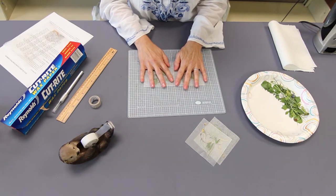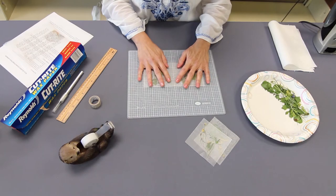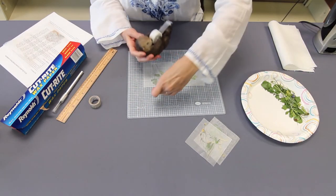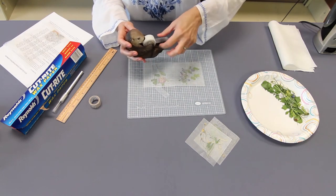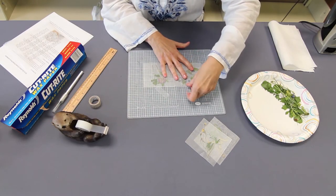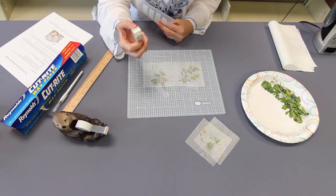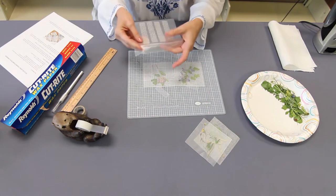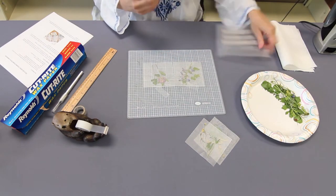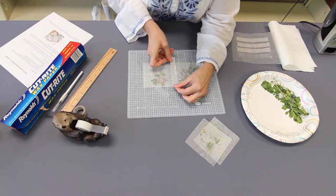This is where the mat comes in handy too because you see it's got the lines on it that help you keep it straight. You also can tape it down if that will help you keep them in place. You need four strips of washi tape. This is what it looks like on the roll. I've already measured them out. They're each five inches long.